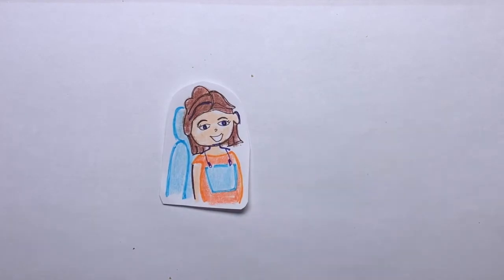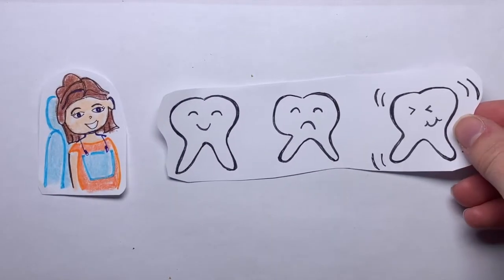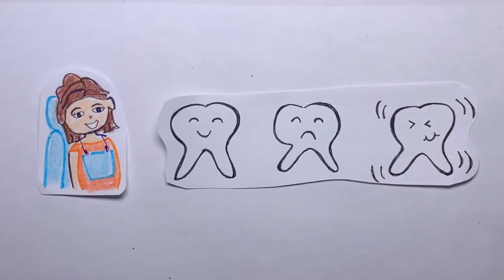Once you're comfy in the big, squishy chair, Julie will put a napkin around you to protect your nice, clean clothes. She'll ask some questions about how your teeth have been feeling. You can tell her if any have been bothering you, have fallen out, or if any are wiggly.